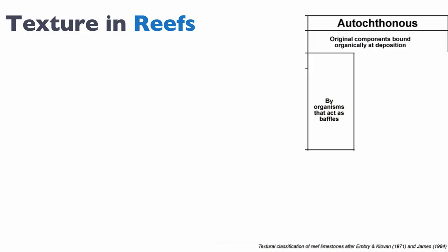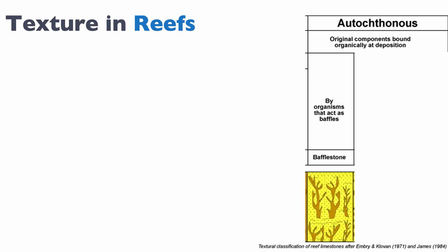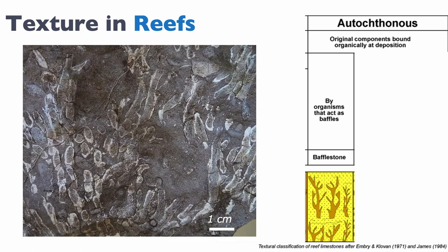Now let's look at another case: if the components are actually bound together at their position. This is really one of the reasons this classification was invented — to look at reefs. Under this classification, three cases are possible. Either the organism forms a baffle, a vertical barrier, and then we talk about baffle stones. Here's an example of an ancient baffle stone — a branching coral — and you can see these corals form a baffle.